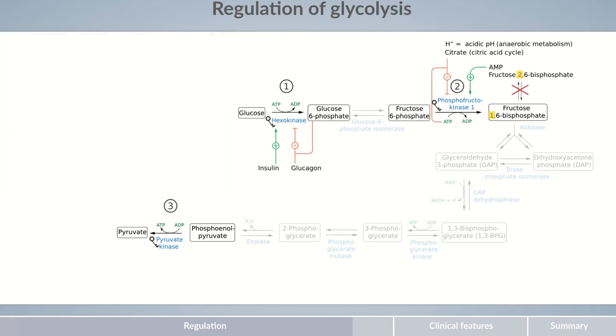The regulation of pyruvate kinase is again somewhat easier to understand. The last step of glycolysis is inhibited, for one, by ATP. Again, ATP serves as a signal that the cell's energy requirements are met. Also, the amino acid alanine inhibits pyruvate kinase. Alanine can be produced from pyruvate and signals that the substrate requirements of other metabolic pathways are covered, similar to the effect of citrate for phosphofructokinase-1.